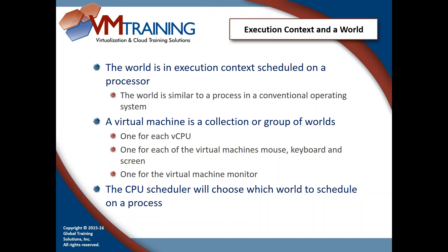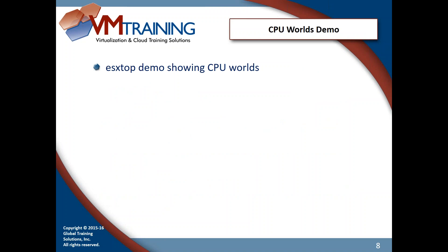A single virtual machine is a collection or group of worlds — just like a Windows box runs numerous processes even though it's one machine. On VMware, one machine is made up of a whole bunch of worlds: one for the virtual machine mouse, keyboard, screen, one for the monitor, and so on. The CPU scheduler chooses which world to schedule on a processor, working with the VMkernel and physical CPU to get everything scheduled. I'm going to turn this over to Dave to demonstrate ESXtop worlds and CPU.